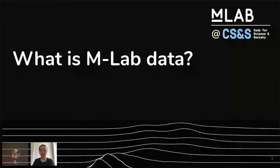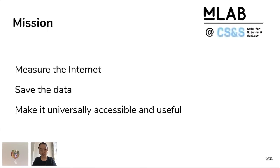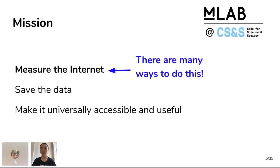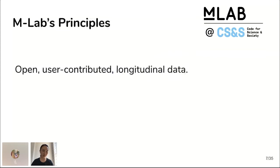A good place to start is talking about the project's mission. Our mission is to measure the internet, save the data, and make it universally accessible and useful. There are so many ways to measure the internet — the internet is a complex network of networks, and adding measurement only increases the complexity. MLab does not claim to do all of them, but we have principles that guide our decisions and that we advocate for as well. These principles are open, user-contributed, and longitudinal data.